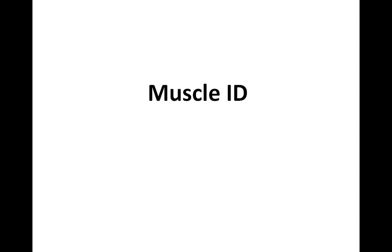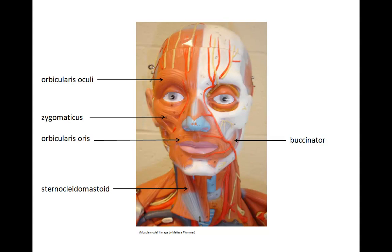Now we move to identifying major muscles of the human body. Orbicularis oculi — blinking and closing of eyelids. Zygomaticus — draws corners of the mouth upwards, smiling. Orbicularis oris — puckering of the lips, kissing. Sternocleidomastoid — flexes the head and bows the head when contracting both; rotates the head toward the shoulder, right or left, when contracting one or the other sternocleidomastoid muscles. Buccinator — sucking or blowing.